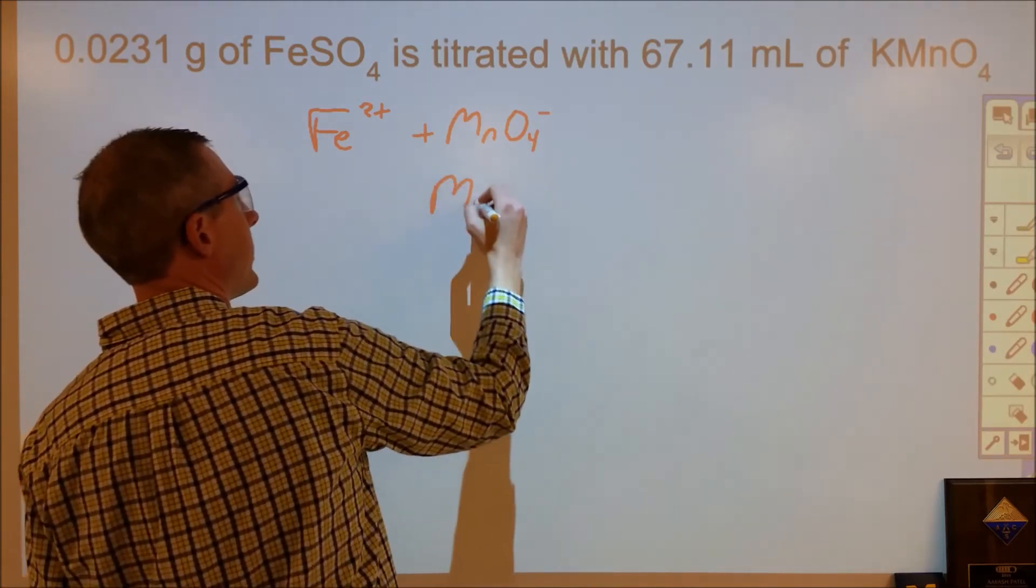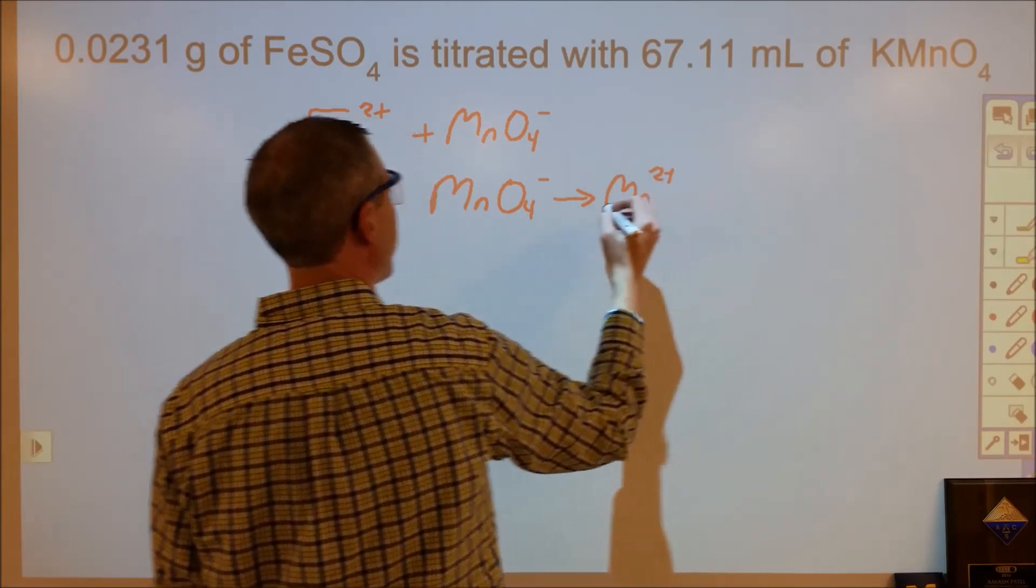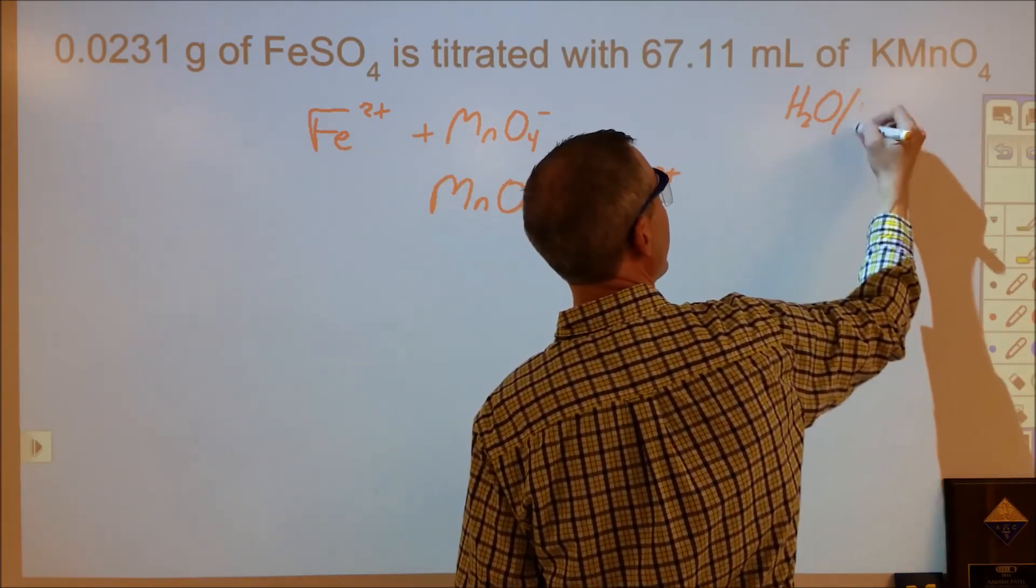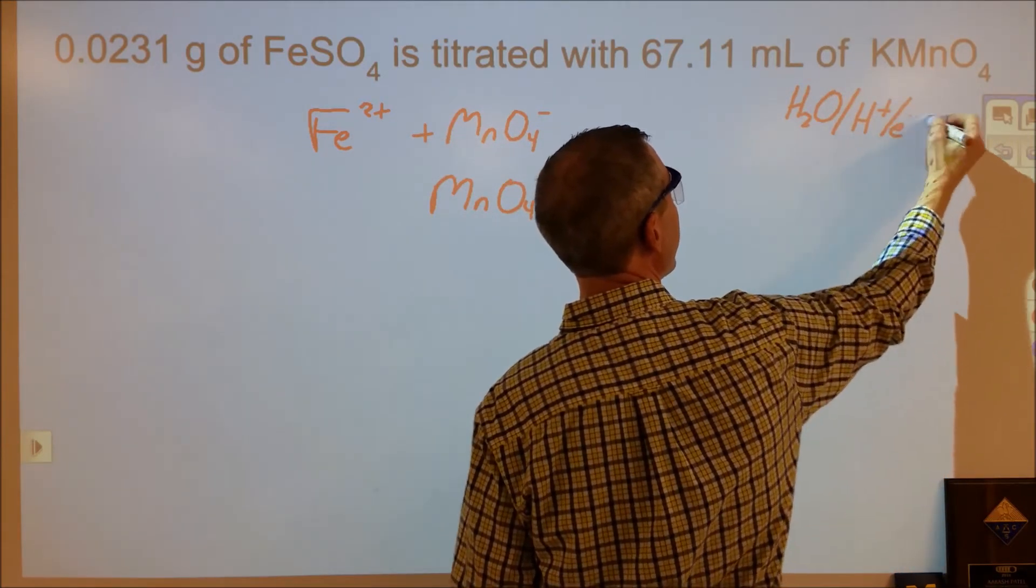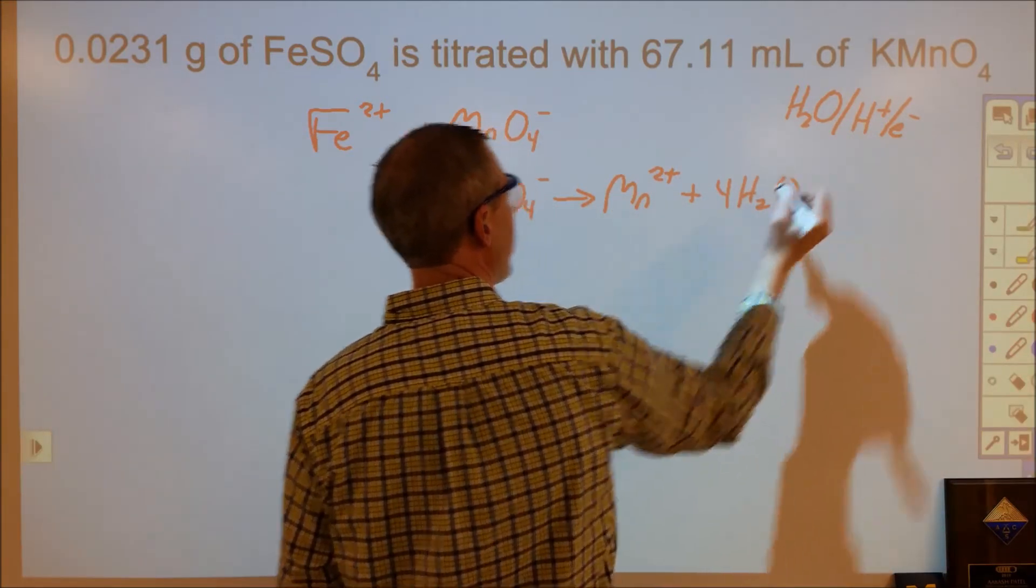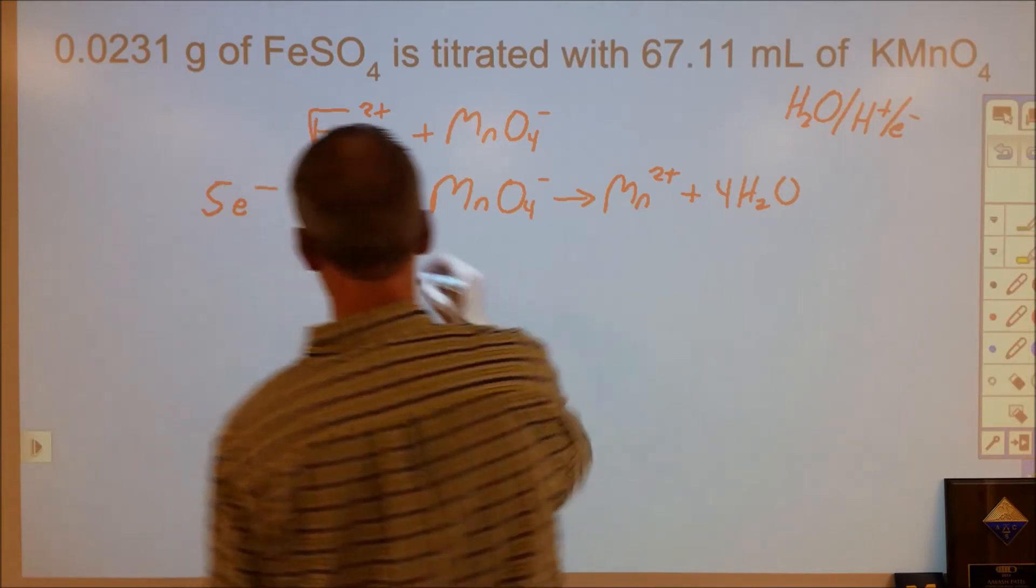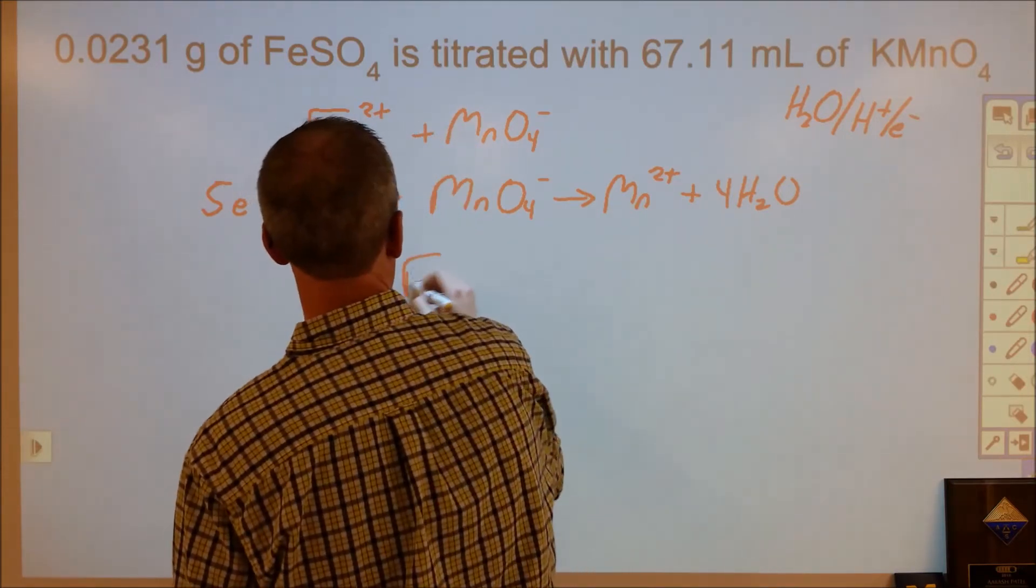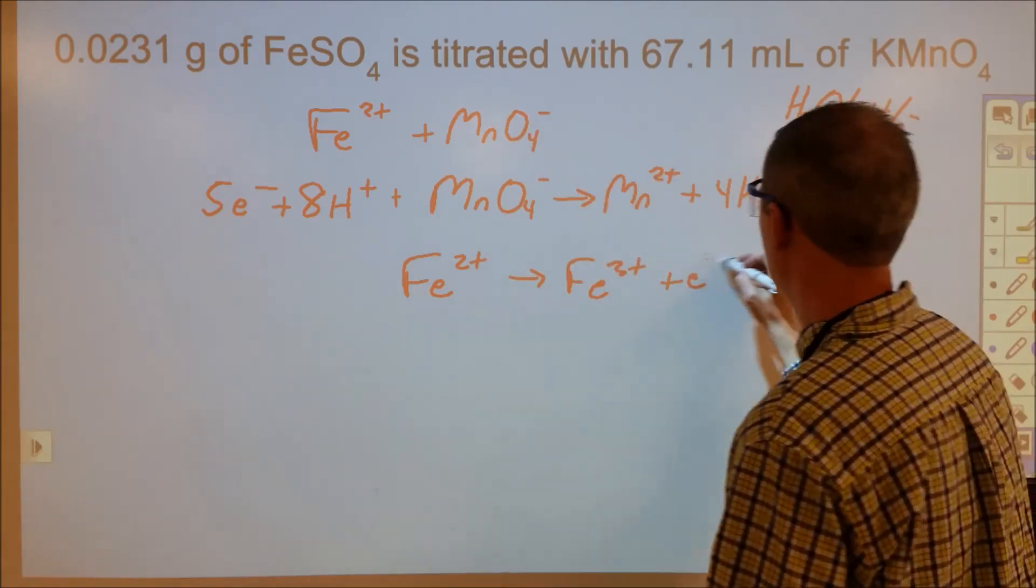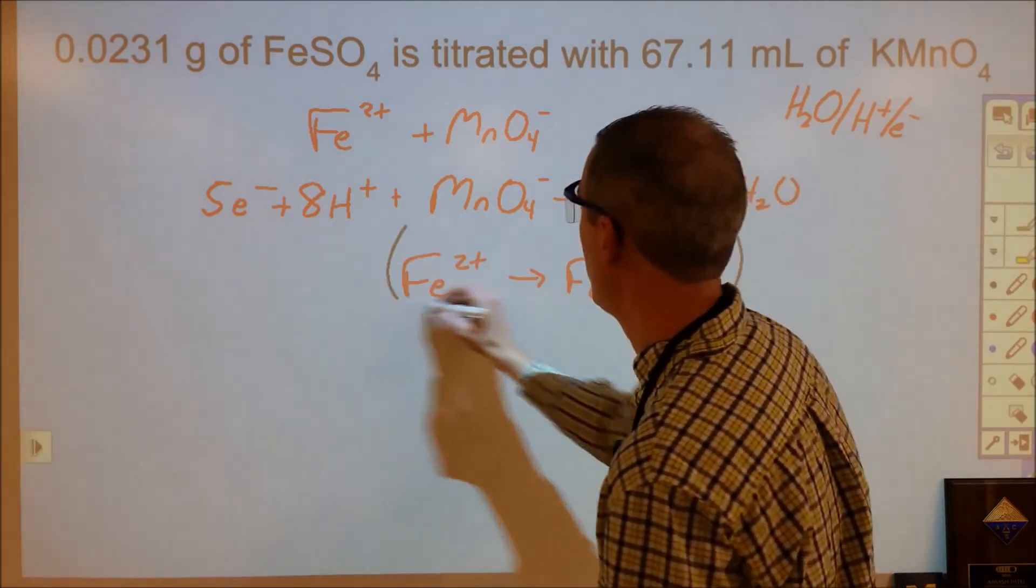The first thing we want to do is we want to balance this. We're going to split this up into half reactions. And in a balancing of a redox under acidic conditions, I have the following three things available to help me balance my half reactions. So I'm going to add some waters here, add some H pluses here and five electrons there. And then the Fe²⁺ will become Fe³⁺ for oxidation. So my overall balanced reaction is going to be the combination of these two, but with this one multiplied by five.